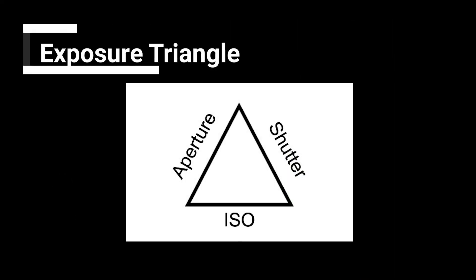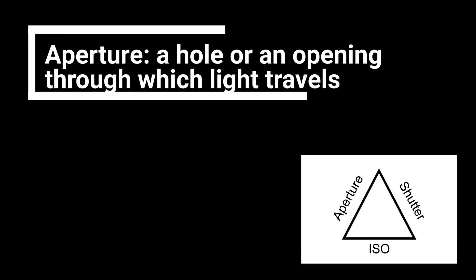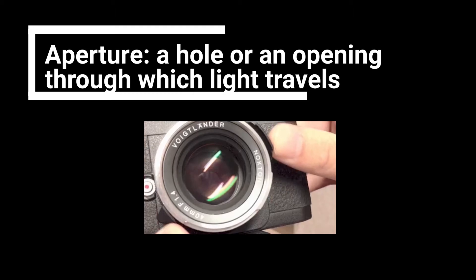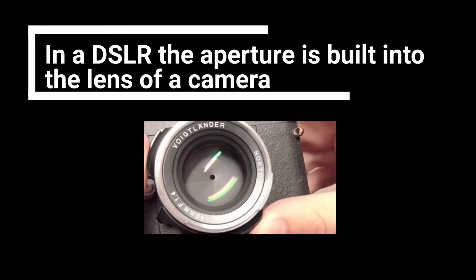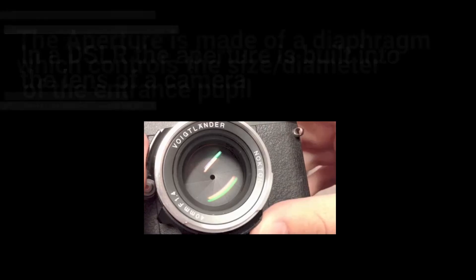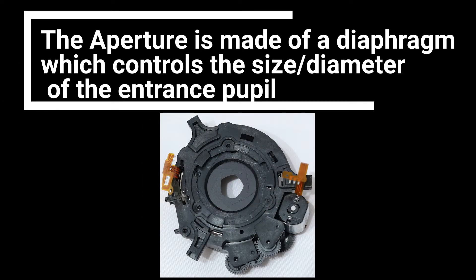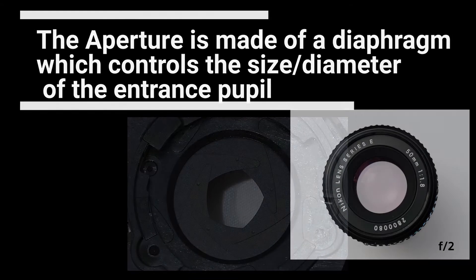Let's revisit the exposure triangle. The exposure triangle is a paradigm that says that exposure needs three components to function: aperture, shutter, and ISO. Here, we're talking about the aperture, which is built into the lens of the camera. The aperture is made of a diaphragm of metal sheets, which control the size of the pupil that allows light to enter into the camera.